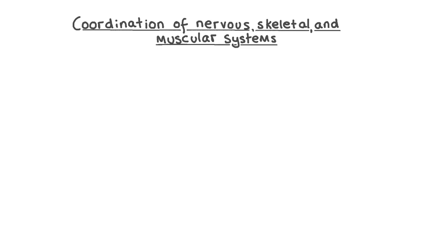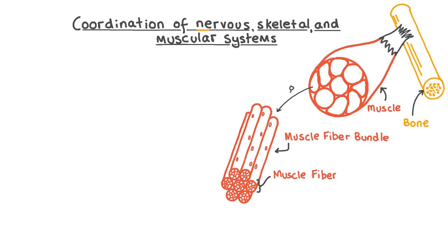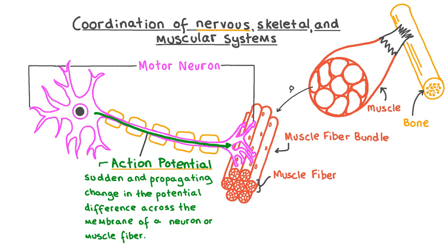This involves coordination of the nervous, skeletal, and muscular systems. The skeletal system is involved in most voluntary responses as skeletal muscles are attached to bones. Bones provide a site that muscles can connect to, and the joints found between many bones allow flexibility of movement resulting from muscle contraction. By magnifying a part of this muscle we can see a muscle fibre bundle made up of several individual muscle fibres. Neurons like this motor neuron conduct electrical impulses called action potentials which stimulate the muscle fibre. An action potential is a sudden and propagating change in the electrical potential difference across the membrane of a neuron or muscle fibre when it's stimulated.